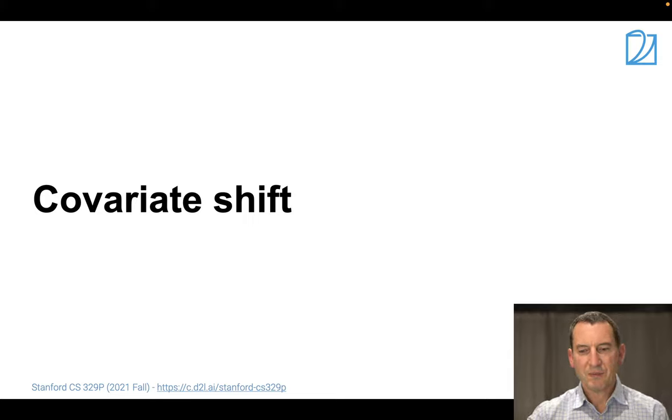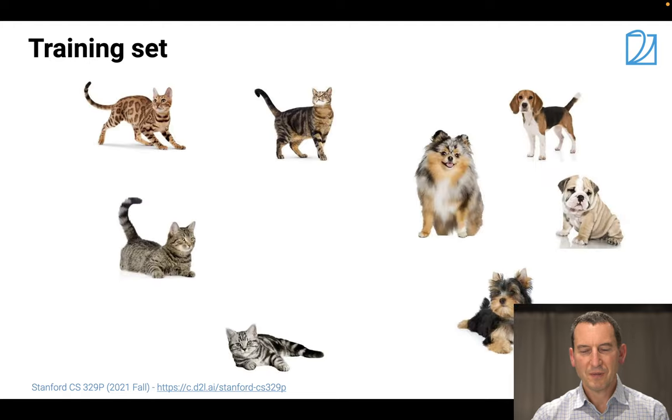So now let's look at Covariate Shift. Let's start again with our cute kittens and dogs, right? And we build a classifier.